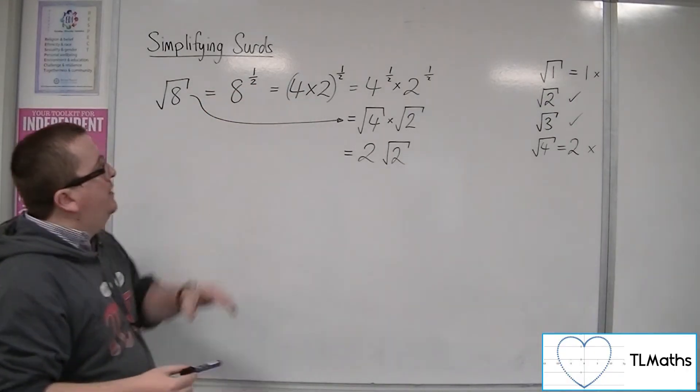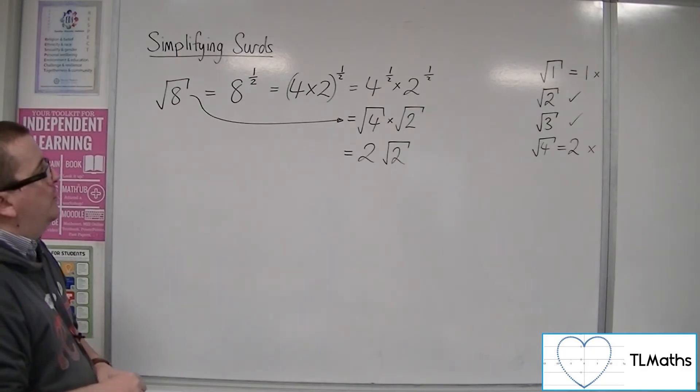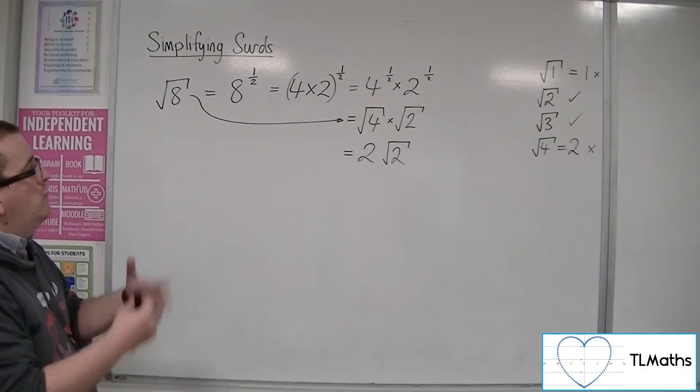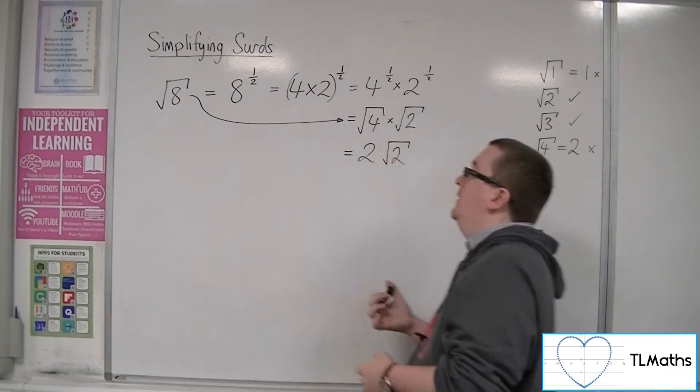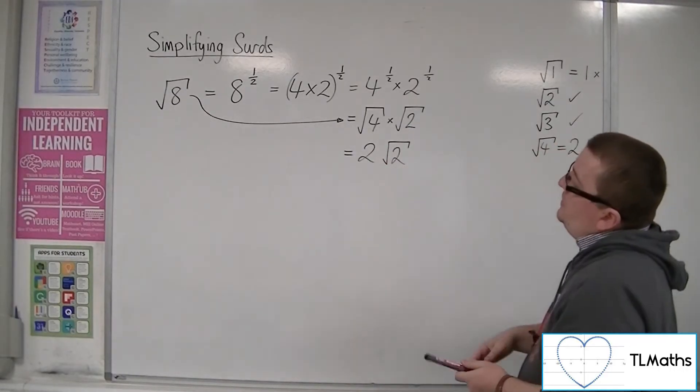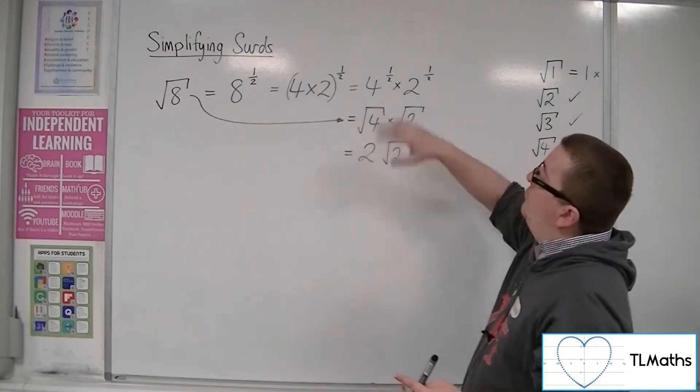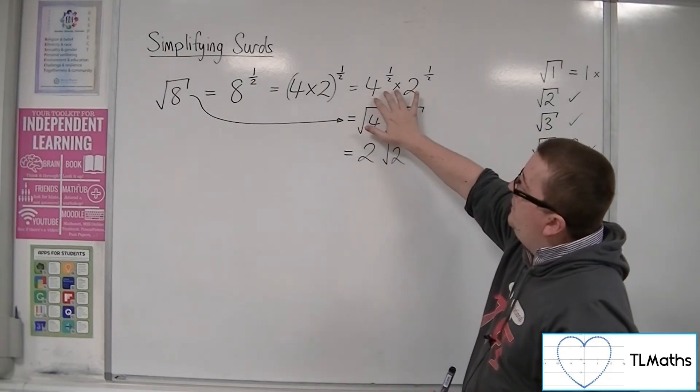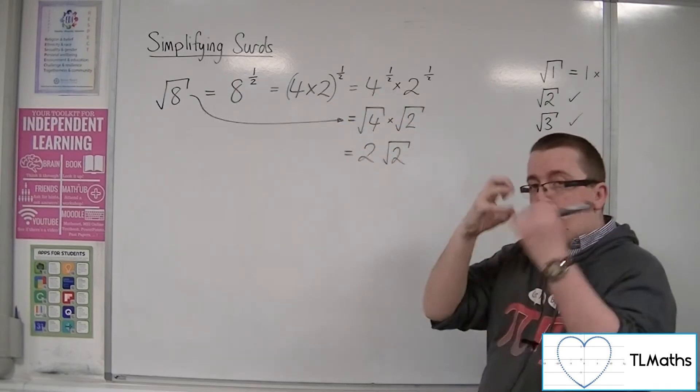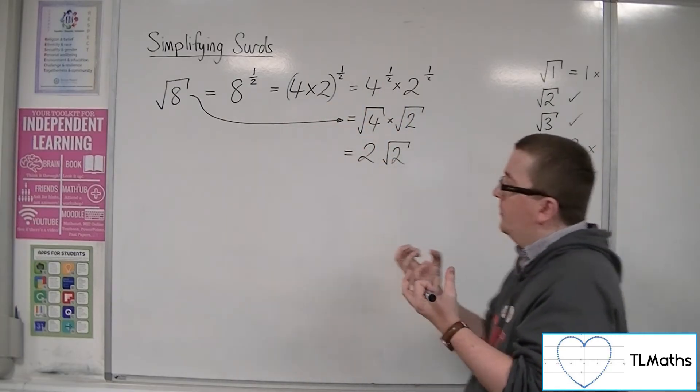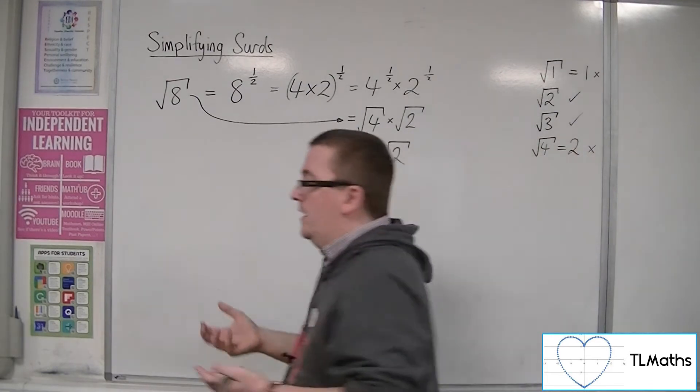Now, why did I choose 4 times 2? Why didn't I just choose to write it as 1 times 8, for example? I mean, that wouldn't really have changed much in this case. But there is definitely an air of choice in the numbers that I'm choosing here to split the 8 up. So let's look at another example.